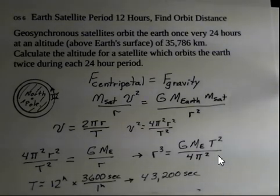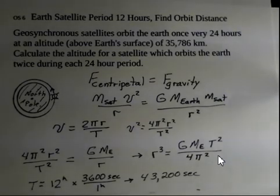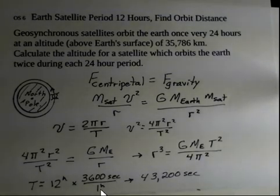It's time to put in some numbers. The first thing we need is the time in seconds, the period in seconds. So we're going to do a conversion here. Hours can be converted to seconds if we multiply by 3600 seconds and divide by one hour. We'll cancel off the hours units and we get 43,200 seconds.